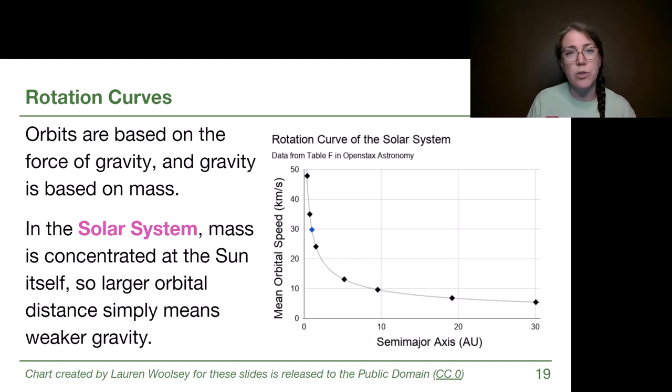We see this curve drop down significantly because what we're seeing is almost all of the mass in the solar system. 99.8% of the mass in the solar system is concentrated in the sun. So as we look at different distances, we aren't adding any additional mass, not really. We're just getting farther and farther away, so gravity is dropping down and slowing us down significantly.